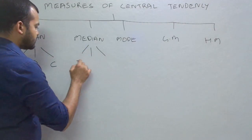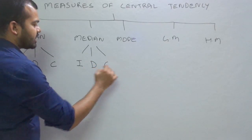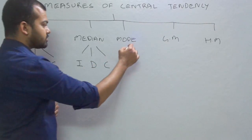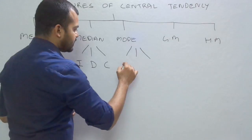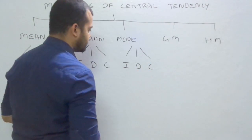The same thing we will do for median and mode: individual series, discrete series, and continuous series for each.